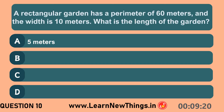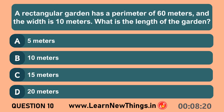A rectangle has a perimeter of 60 meters and a width of 10 meters. What is the length of the garden? 20 meters.